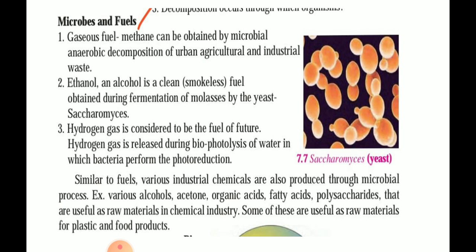Similar to fuels, various industrial chemicals are also produced through microbial processes. These include various alcohols, acetone, organic acids, fatty acids, and polysaccharides. These are the raw materials used in chemical industries for making plastic as well as some food products.